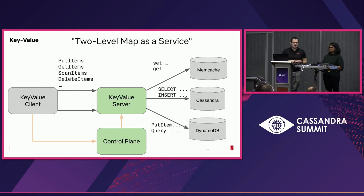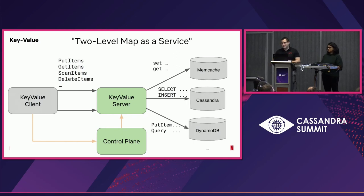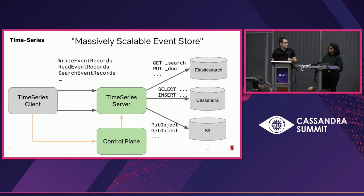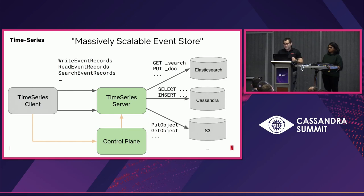Today we'll be talking about two key abstractions rolled out over the past two years. The first is a key-value abstraction that exposes a multi-item map API, and we're able to translate it to different storage engines, including different versions of those engines. This was key in our ability at Netflix to get off Cassandra Thrift — we had two storage engines, one for Thrift and one for CQL. We also built a time series abstraction: an immutable event store handling potentially millions of requests per second and petabytes of state, combining Elasticsearch for full time-series search with Cassandra for actual storage.